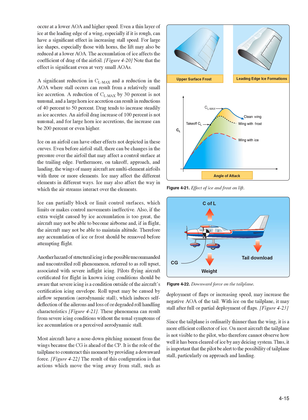These phenomena can result from severe icing conditions without the usual symptoms of ice accumulation or a perceived aerodynamic stall. Most aircraft have a nose-down pitching moment from the wings because the CG is ahead of the CP. It is the role of the tailplane to counteract this moment by providing a downward force. Actions which move the wing away from stall — such as deployment of flaps or increasing speed — may increase the negative AOA of the tail. With ice on the tailplane, it may stall after full or partial deployment of flaps. Since the tailplane is ordinarily thinner than the wing, it is a more efficient collector of ice. On most aircraft the tailplane is not visible to the pilot, so it is important that the pilot be alert to the possibility of tailplane stall, particularly on approach and landing.